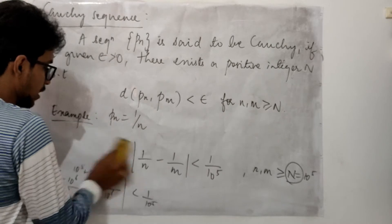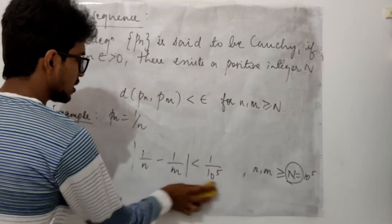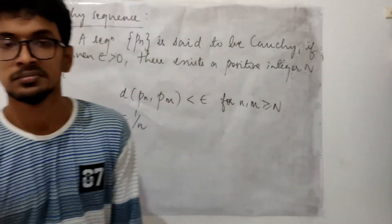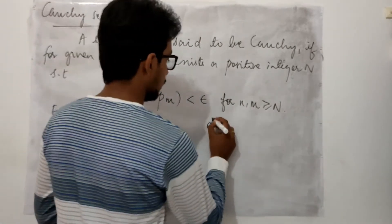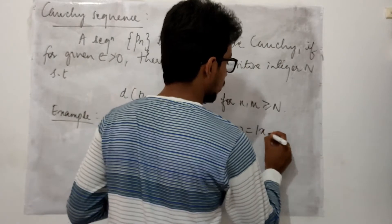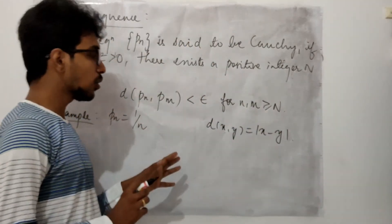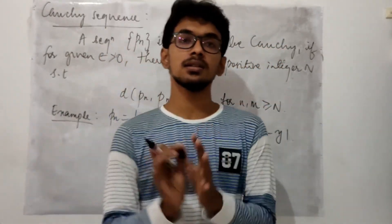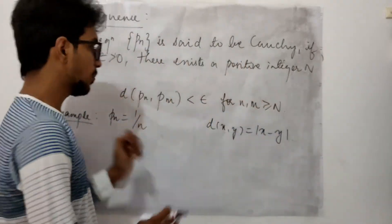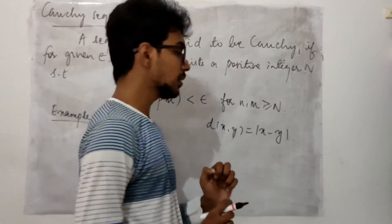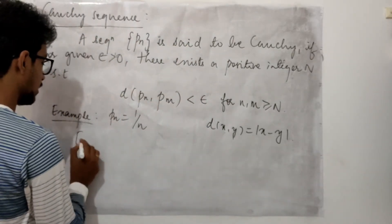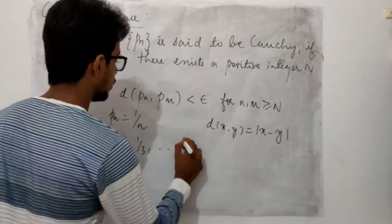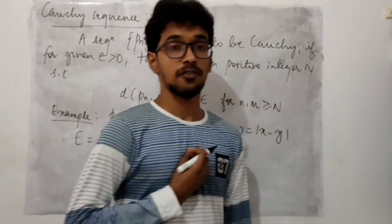Here I have not specified the metric space; I calculated using the absolute value, which means I am talking about the Cauchy sequence in the Euclidean metric space. The metric considered is the standard Euclidean metric, and under this metric I am proving the sequence to be Cauchy. In order to prove the sequence is Cauchy in some metric space, the range of the sequence must be a subset of that metric space. If the range of the sequence is E = {1, 1/2, 1/3, ...}, this must be a subset of the metric space considered.